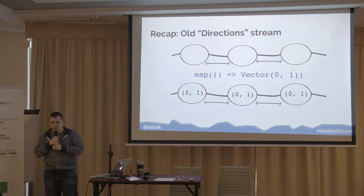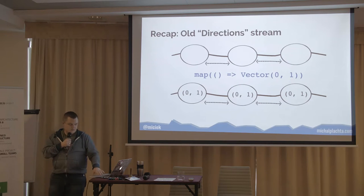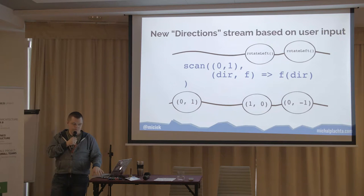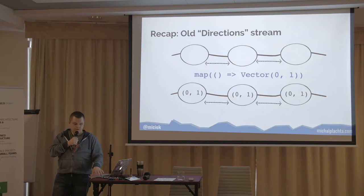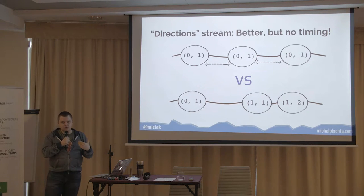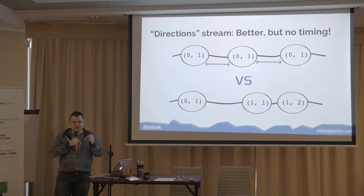To recap — what's the difference between the old and the new direction stream? In the new approach we have no time at all. We had a tick stream before, so the snake was moving every tick. But now we just changed direction each time the user presses a key — snake will always move whenever the user presses a key. So let's fix that by applying the fifth operator: sampledBy.